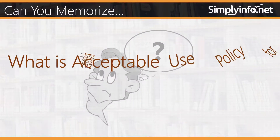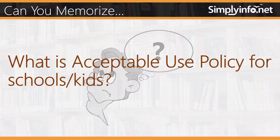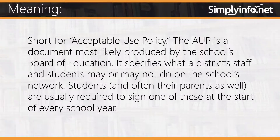Can you memorize what is acceptable use policy for school kids? The AUP is a document most likely produced by the school's Board of Education. It specifies what the district's staff and students may or may not do on the school's network. Students, and often their parents as well, are usually required to sign one of these at the start of every school year.